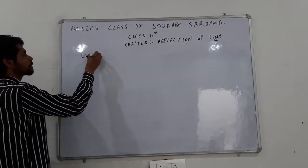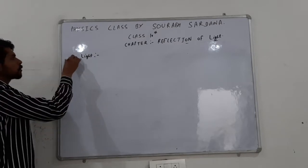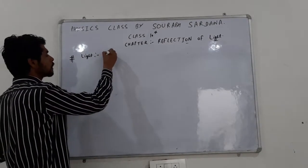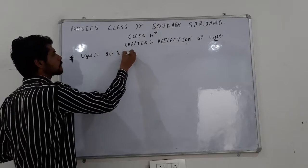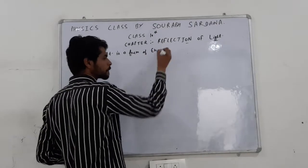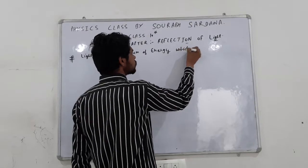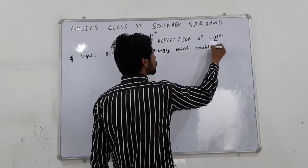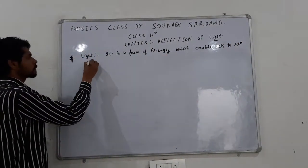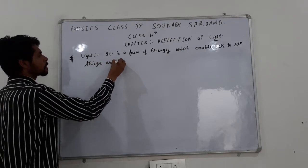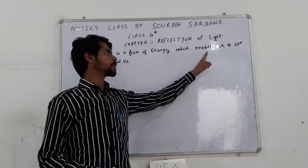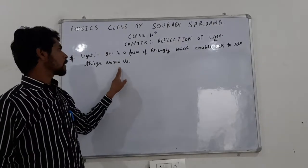What is light? The first term we are going to study today is: what is light? It is a form of energy which enables us to see things around us.